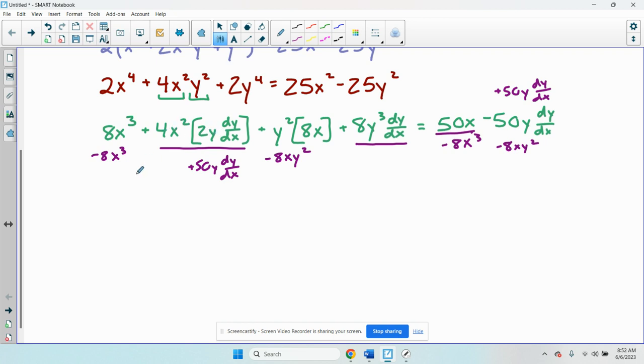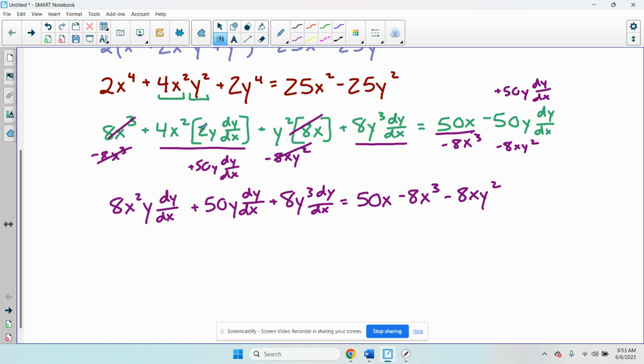A lot going on but you can definitely do this in more than one step. The left hand side is going to be, I'm going to multiply the 4x squared into 2y, I get 8x squared y dy dx plus the 50y dy dx plus 8y cubed dy dx equals the 50x is going to stay minus 8x cubed minus 8xy squared. Let's just make sure that everything is correct.